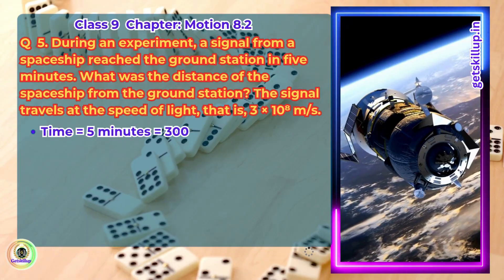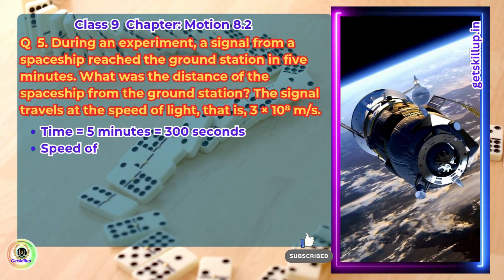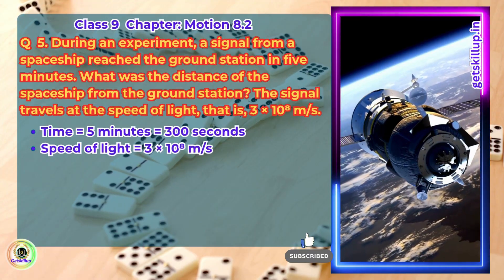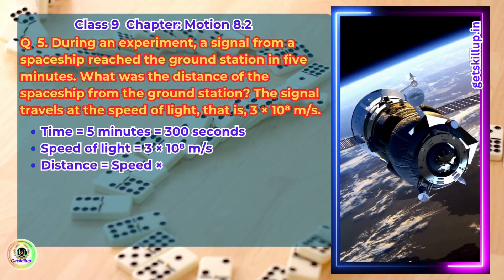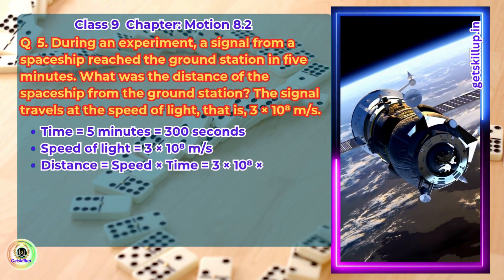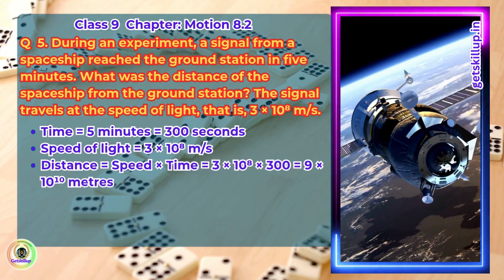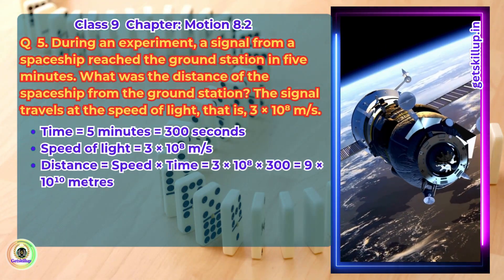Time equals 5 minutes, which is equal to 300 seconds. Speed of light equals 3 x 10 to the power of 8 m per second. Distance equals speed into time, which is equal to 3 x 10 to the power of 8 x 300, which is equal to 9 x 10 to the power of 10 meters.